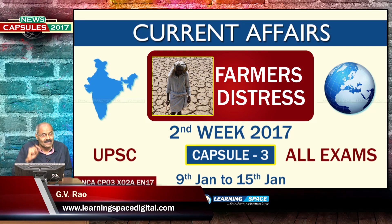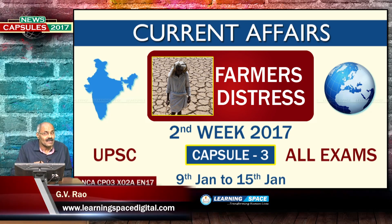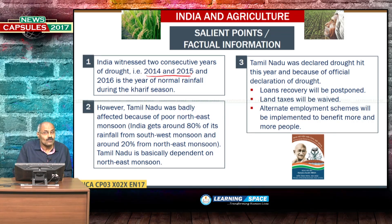During the editorial discussion, we discussed certain aspects and some more have been added here. This will be useful in future because you can add these points whenever you are presenting content pertaining to Indian agriculture, whether in an essay or article. India witnessed two consecutive years of drought in 2014 and 2015, but 2016 is the year of normal rainfall during the Kharif season.